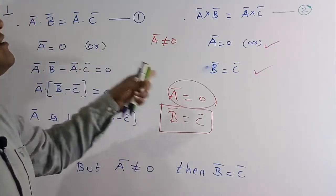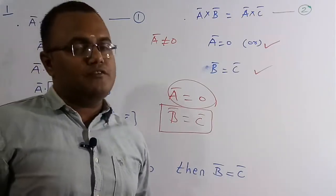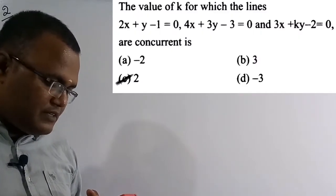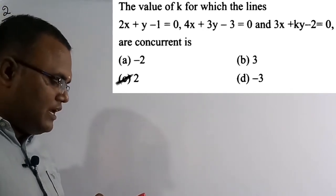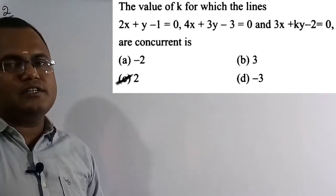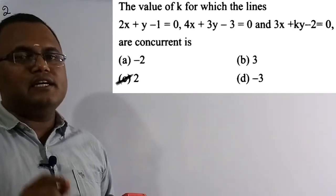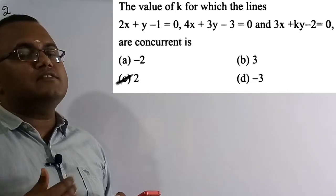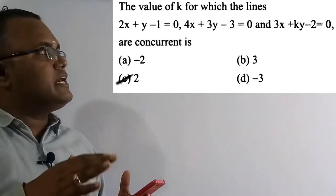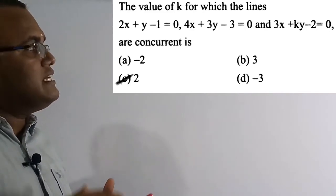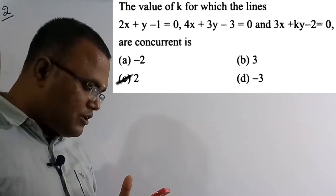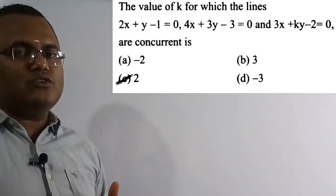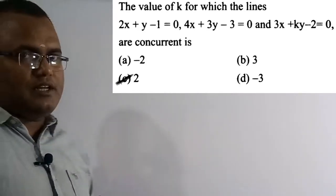The second question: find the value of k for which the lines 2x + y − 1 = 0, 4x + 3y − 3 = 0, and 3x + ky − 2 = 0 are concurrent. Option C is correct: k = 2.